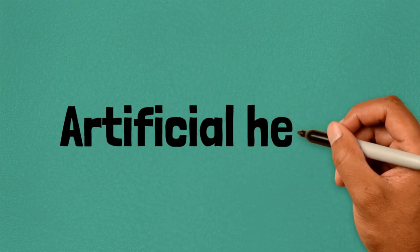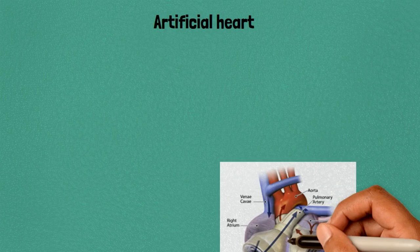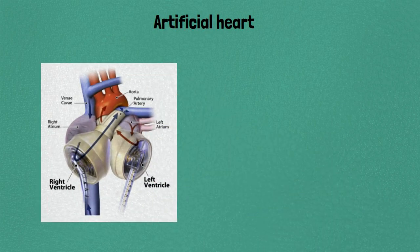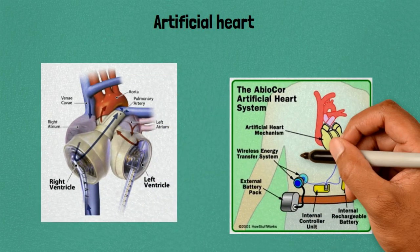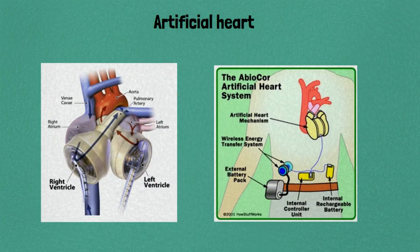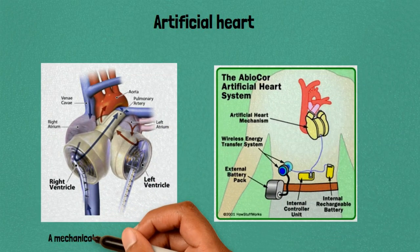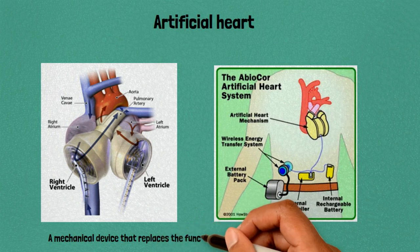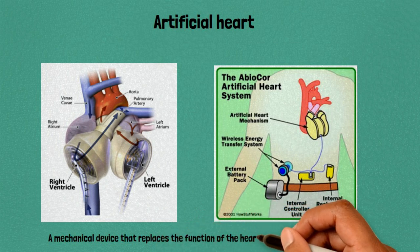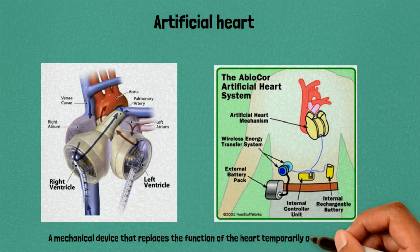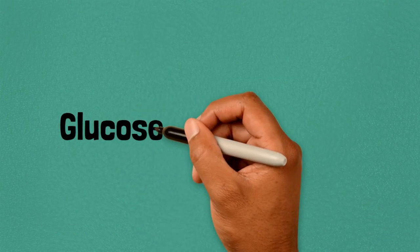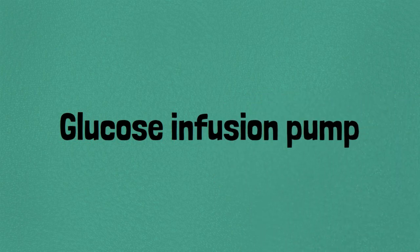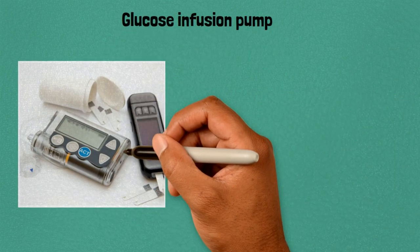Forty-nine: phacoemulsification machine, used in cataract surgery to break up and remove the cloudy lens. Fifty: artificial heart, a mechanical device that replaces the function of the heart temporarily or permanently.